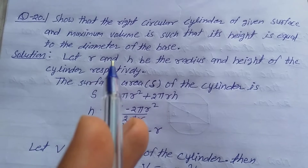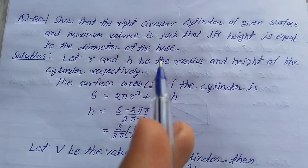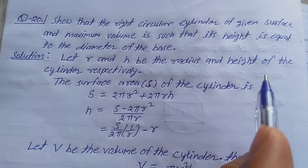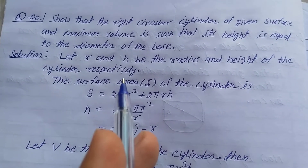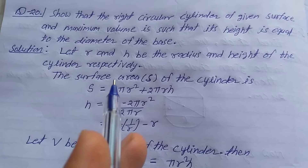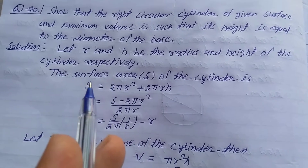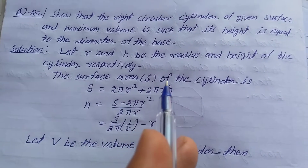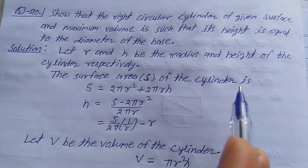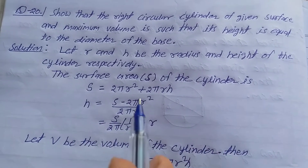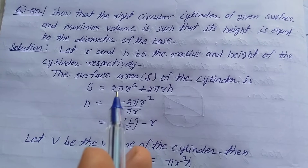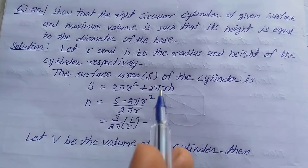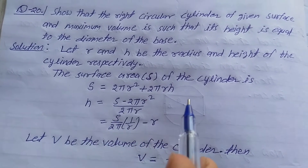Solution start. Let r and h be the radius and height of the cylinder respectively. The surface area S of the cylinder is S = 2πr² + 2πrh.